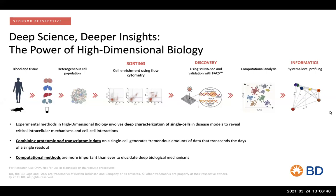We at BD Biosciences have been doing single-cell analysis of the immune system by flow cytometry since the 1970s. We are able to characterize many varied cell types and functions by looking at the proteins expressed on individual cells, analyzing thousands of cells per second. Not only that — after analyzing those cells, we also have the ability to pick out cell types of interest and sort them out to perform further experiments.